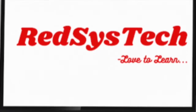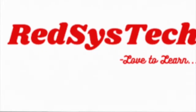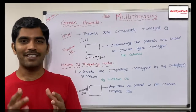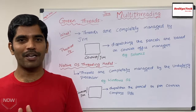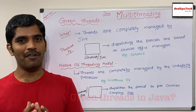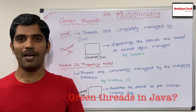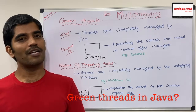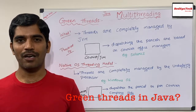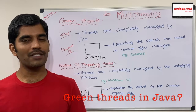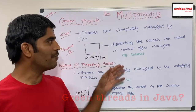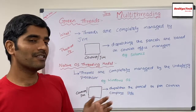This is a short video where I want to explain the different types of models we have in multi-threading in Java. There are two different types: one is the green thread model and the other is the native OS threading model. We are going to see what each one is and how it actually works.